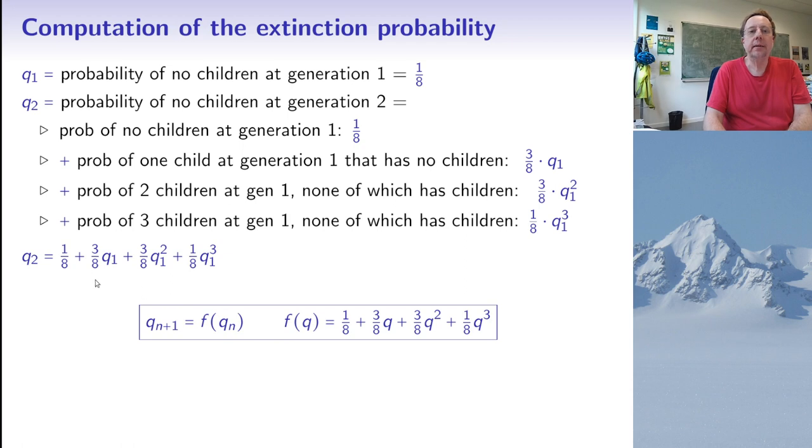And by exactly the same argument, what I find is that Qn plus 1 is a certain function of Qn, given by a similar expression. So 1 over 8 plus 3 over 8 Q plus 3 over 8 Q squared plus 1 over 8 Q to the 3. So just by iterating this map, Q maps to F of Q, I can find all the probabilities of extinction after n steps.